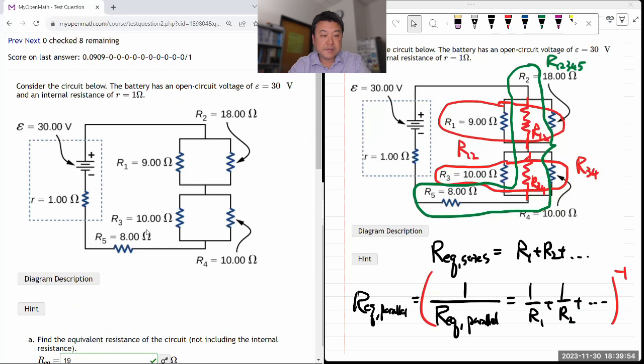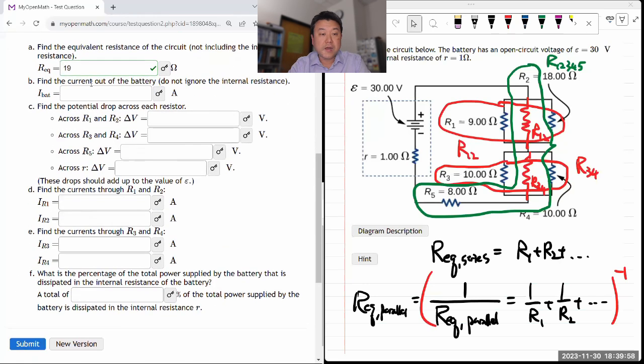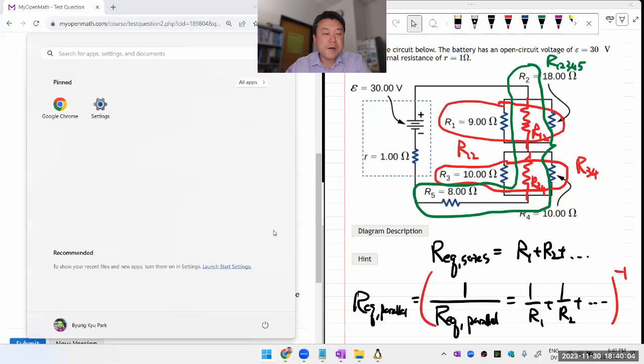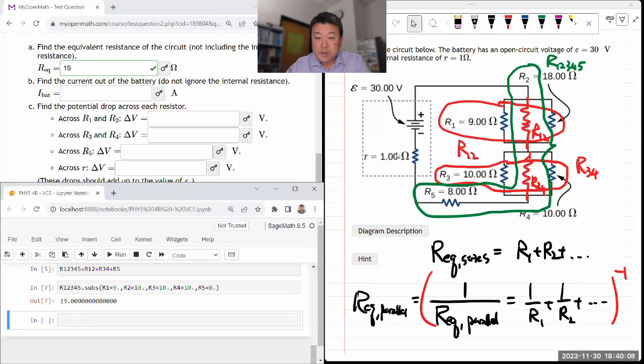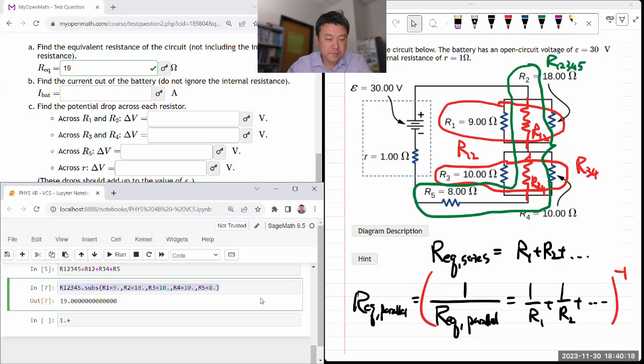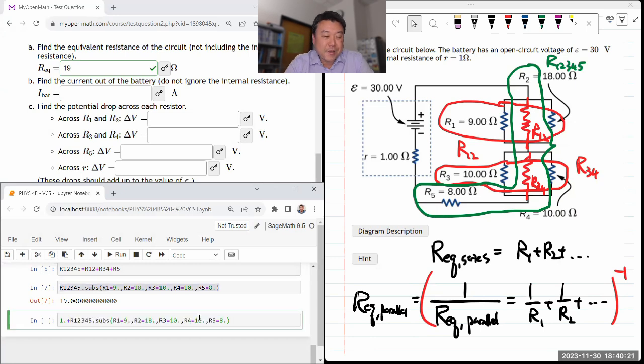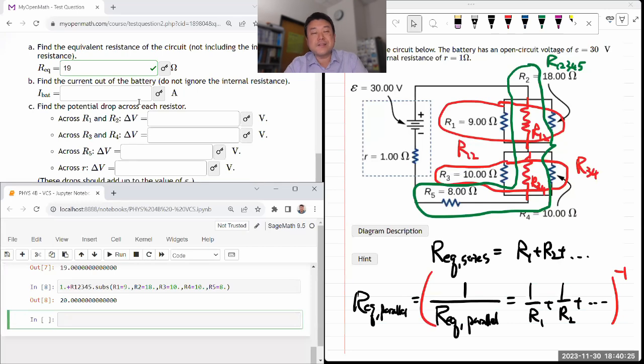So given that 19 ohm of equivalent resistance, the current out of the battery must be, now it says do not ignore the internal resistance. So I'm looking at internal resistance plus R12345. So what I'm going to say is, okay, internal resistance is one ohm. That plus what we had here, I can do that in my head, that's 20. So 20 ohm, that's not the answer. That's the total equivalent resistance. So the current you get out of this battery of 30 volts through 20 ohm resistance would be Ohm's law, the voltage divided by the resistance, or 3 over 2, that's I think 1.5, 1.5 ampere.